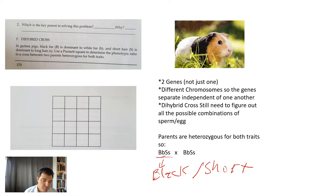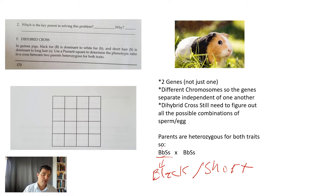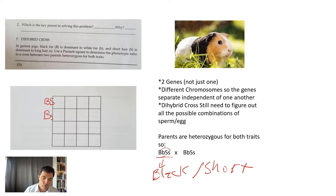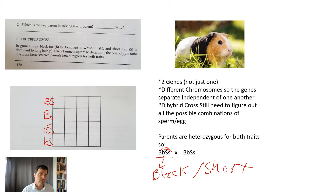We have to figure out the combinations of sperm or eggs that could be made, but now we have two different genes, so we have to consider how they might be packaged together. One combination could be a big B and a big S, or a big B with a little s, or a little b with the big S, or a little b with a little s. Those are all the different possible combinations of sperm or egg.